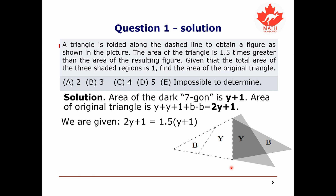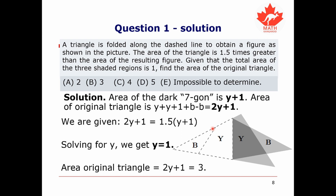We're given that the area of the original triangle is 1.5 times the area of the resulting polygon. So the equation is: 2y + 1 = 1.5 times (y + 1). Solving for y gives y equals 1. Since the area of the original triangle is 2y plus 1, that means the area is 3. The answer is B, 3.